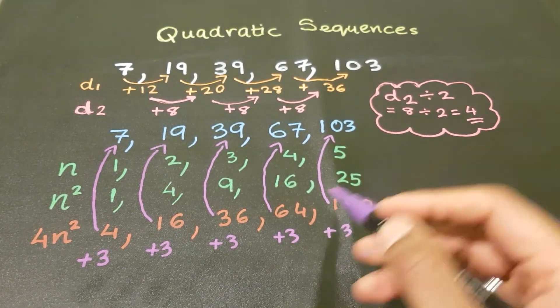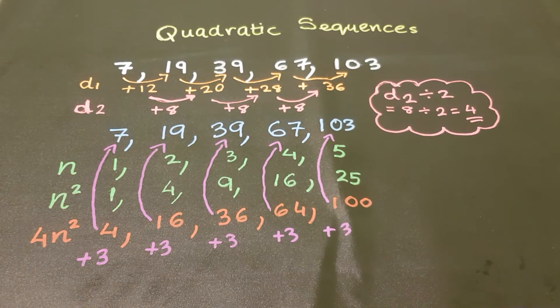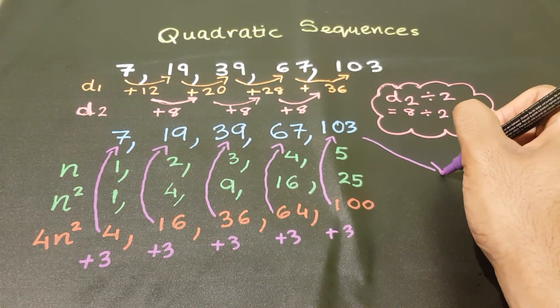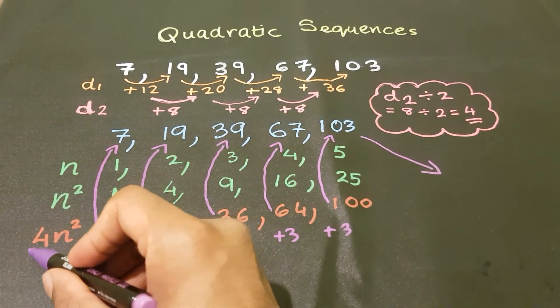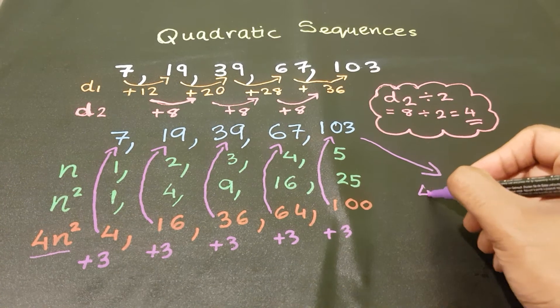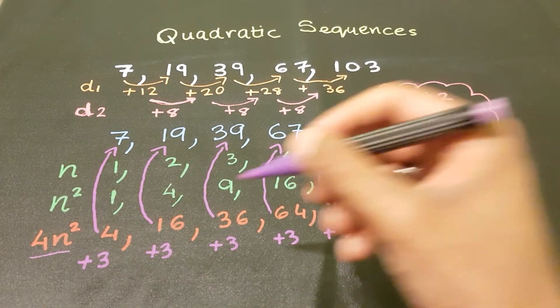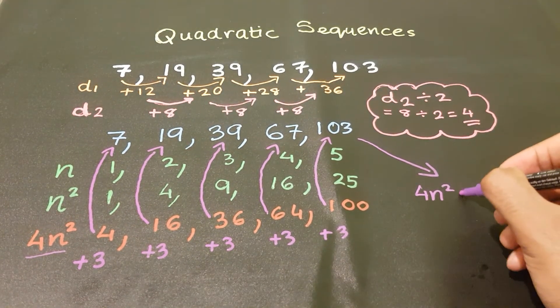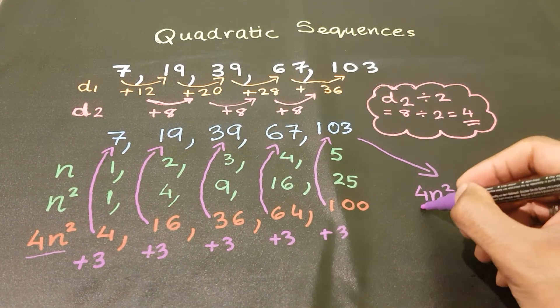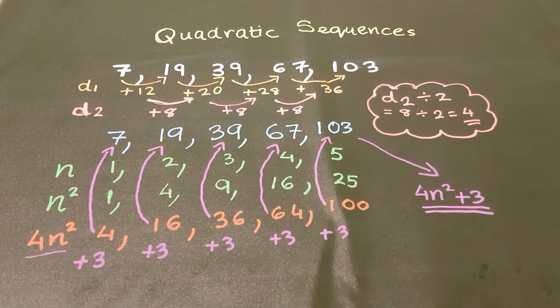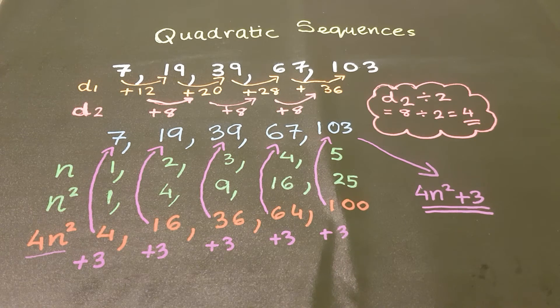Since I have to do the same thing each time, I can now write out the nth term of this sequence. Here, I take the 4n squared, and what do I have to do to the 4n squared to get to my original sequence? I need to just add 3. And there we go. That's the nth term of this quadratic sequence. Now, there are some other variations, and I will show you another video with another variation.